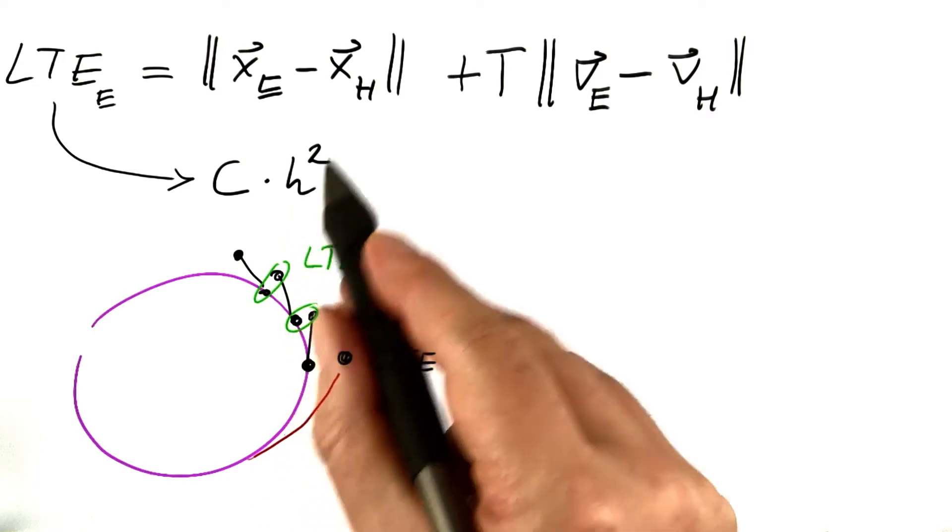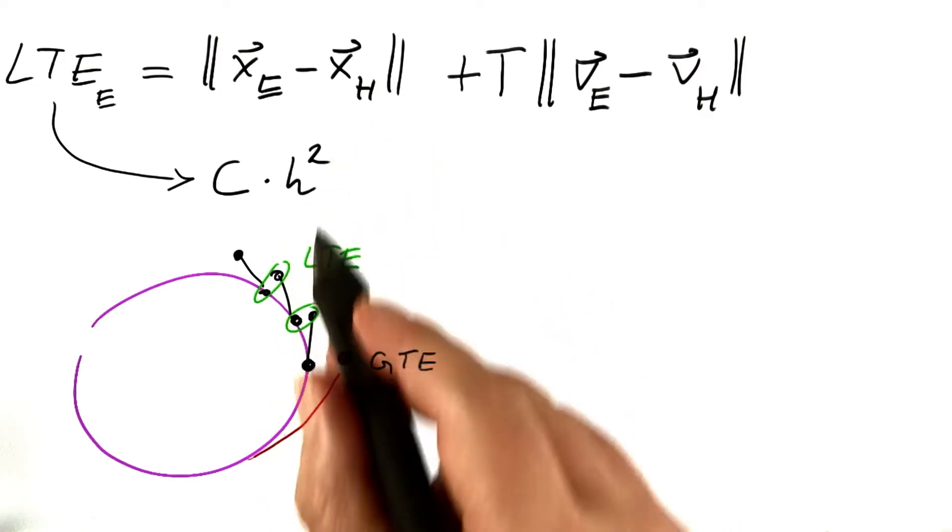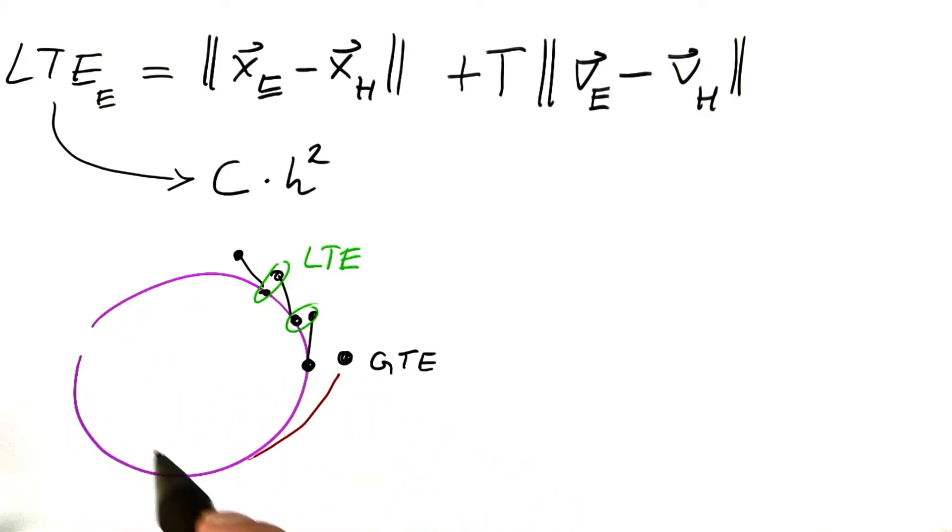You can check the plausibility of h squared appearing here. If I double the step size, I only need half as many steps.